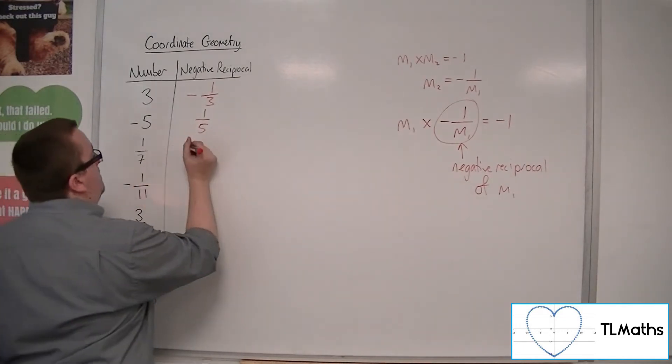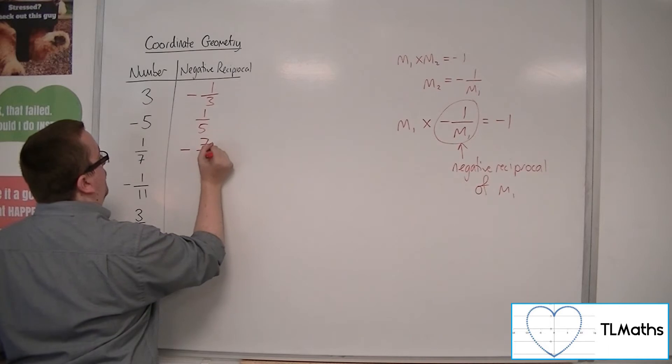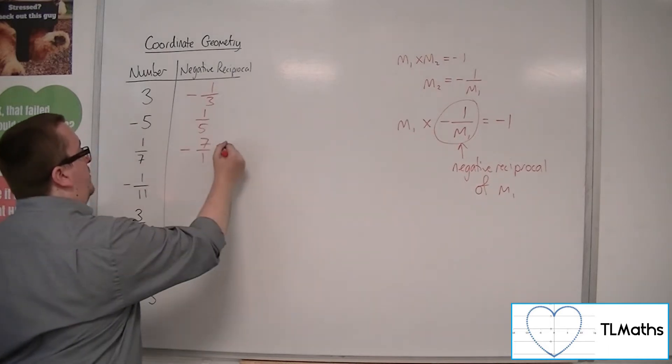1 seventh will be minus 7 over 1, which is just minus 7.